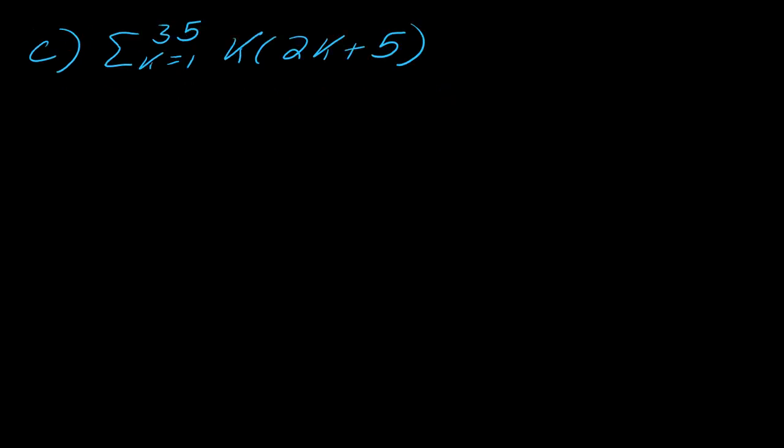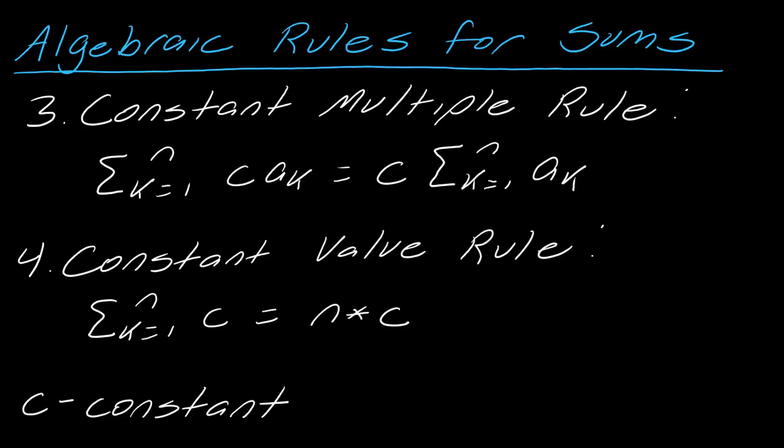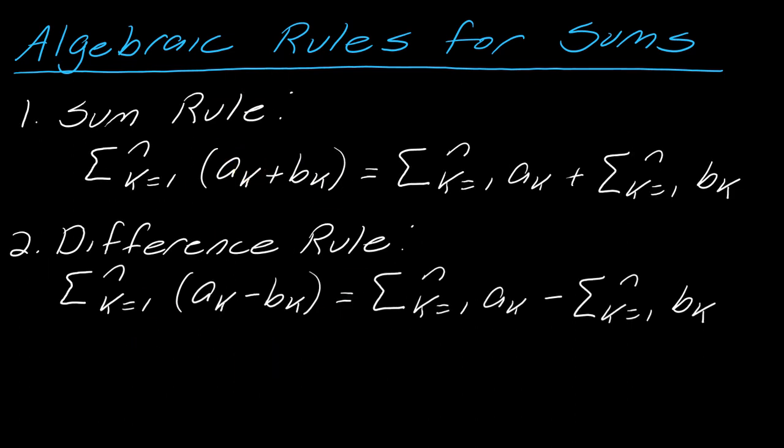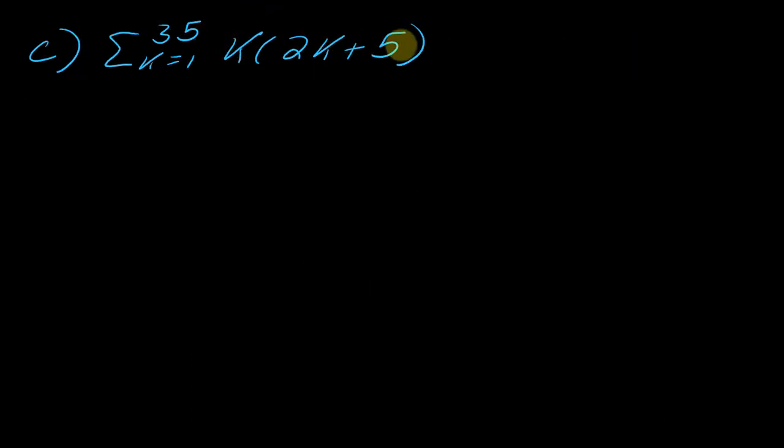So I have one more which has got a little bit of a twist to it just to kind of show you something that can happen with these. So just notice that I have k times all of this and in our list of rules we don't have anything about when a k is multiplied by another k. So as this stands you can't actually use any of the rules. It's not like you can do the first n terms and try to break all this up. Our algebraic rules, if you go back through the list, like our constant multiple rule that only works if you have whole numbers. It doesn't work for splitting up two formulas. We don't have that rule in our list as it stands.